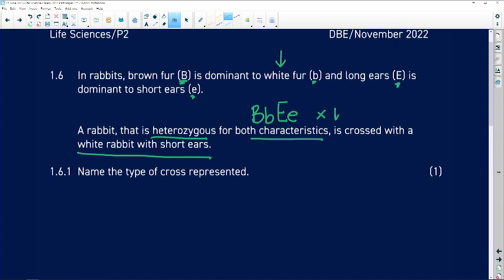A white rabbit is going to be homozygous recessive, and short ears is going to be represented by the recessive allele. What do we call this type of cross?